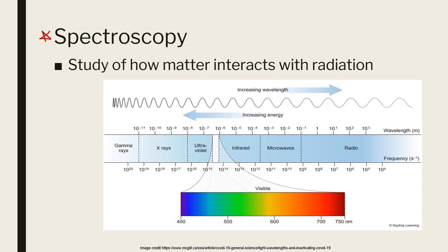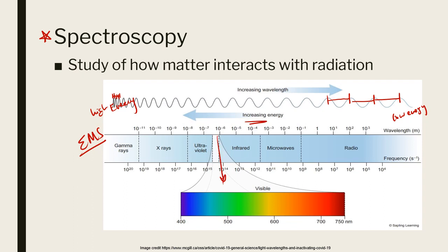Now we're going to flip over to some actual spectroscopy — how matter interacts with radiation. The electromagnetic spectrum has short wavelengths with high frequency and high energy on one end. The shorter the wavelength, the higher the energy. Long, lazy wavelengths have less energy and lower frequency. Visible light sits roughly in the middle. We'll look at different kinds of radiation and how matter interacts with different parts of the electromagnetic spectrum.